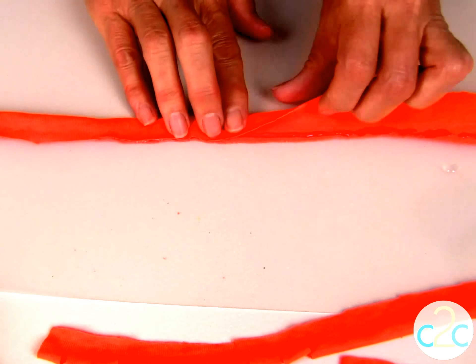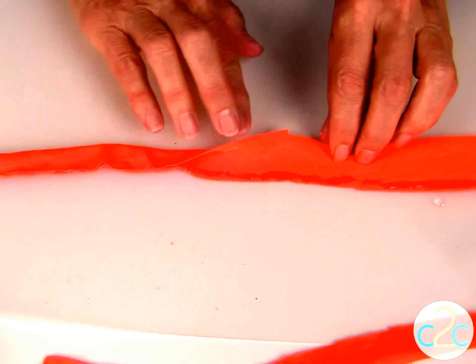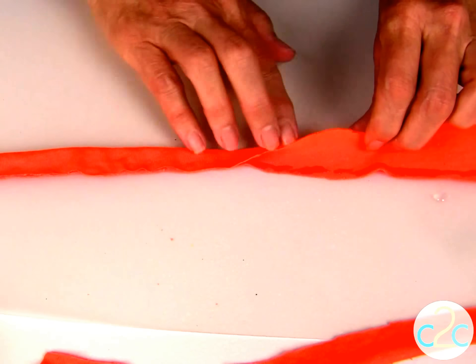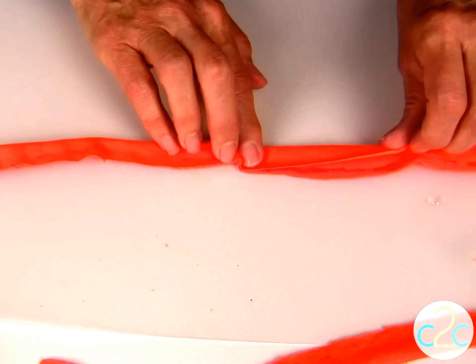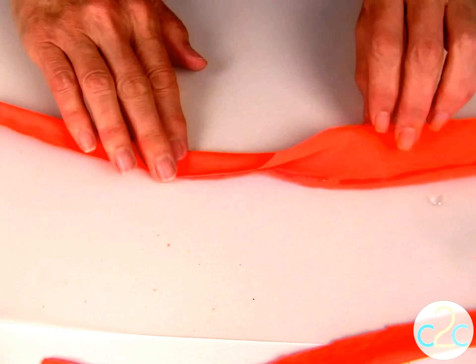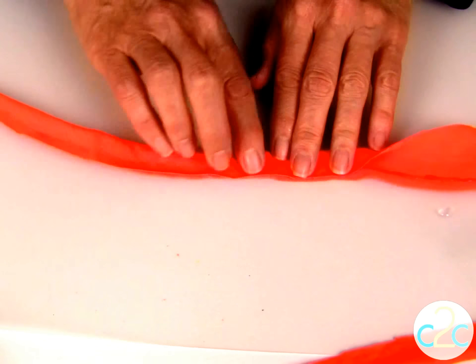Just fold your fabric in half, and remember if you want a larger flower then you would want to cut your strip larger. This is about an inch and a half wide, so you just fold that strip right in half.